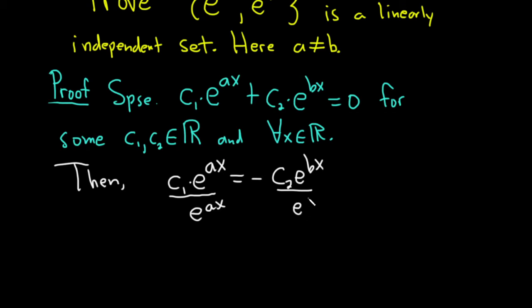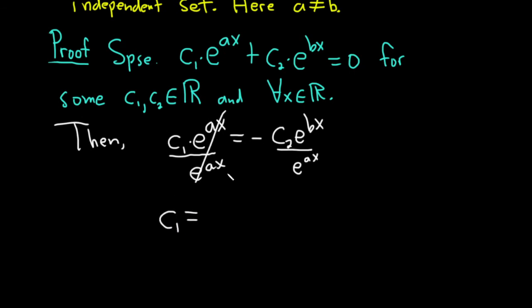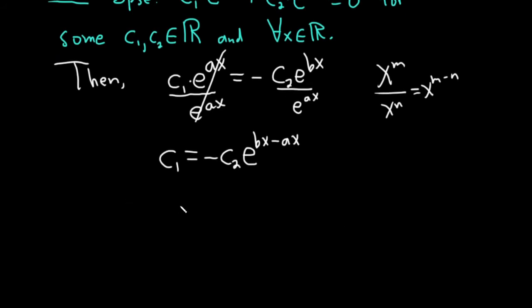So these go away. So we have c1 equals negative c2. And when you divide these, you subtract the exponents. Okay, it's kind of like if you have x to the m over x to the n, it's x to the m minus n. Except instead of x here, it's e, the bases are the same. So you subtract the exponents. So this is e to the bx minus ax. I'm going to write this a little bit cleaner down here in this line. So c1 is equal to negative c2 e. Let's go ahead and pull out the x. I'll write it like this b minus a and then times x.